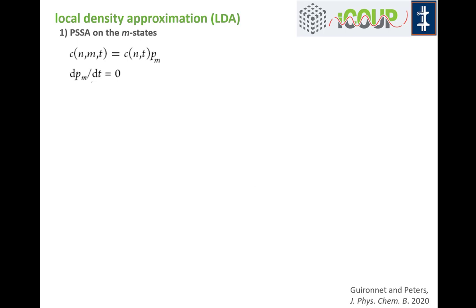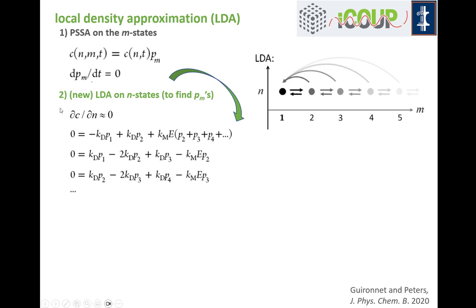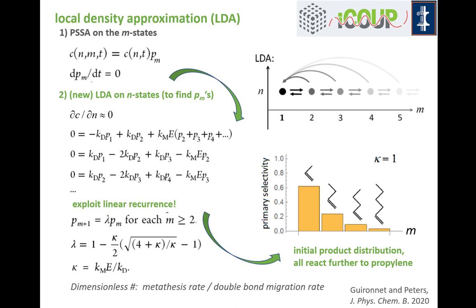We developed a new set of approximations. It starts with a pseudo-steady-state approximation on the locations of the double bonds along these chains. Then we make a further approximation — a local density approximation, where we say the chain population locally doesn't vary by much as you go from one chain length to neighboring chain lengths. We get rid of all time derivatives and have linear recurrence relations that we solve for the parameter lambda governing the decay of double bond locations.